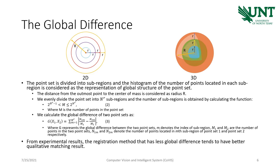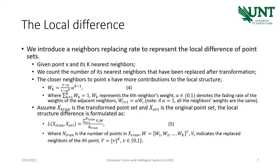Note that from the experimental results, the registration method that has less global difference tends to have better qualitative matching results. So in the following, we consider the registration method that holds less global difference as having a better matching result.